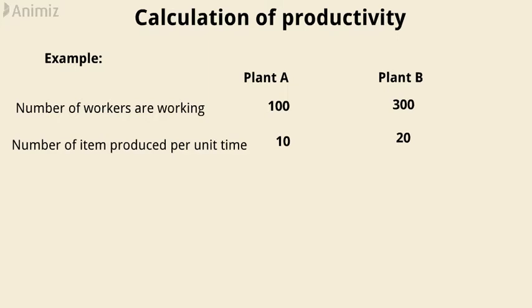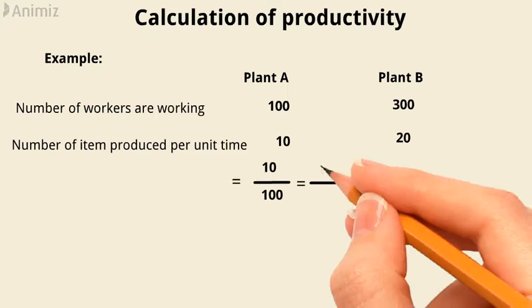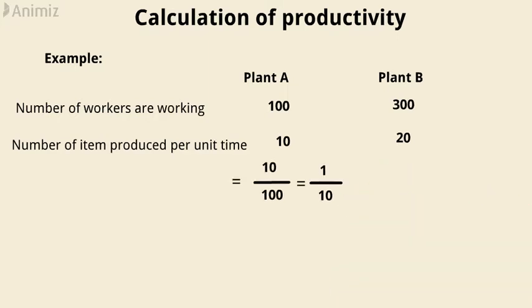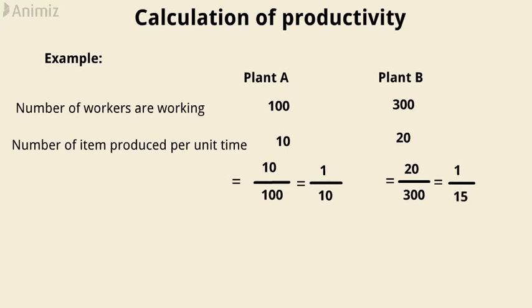Therefore, productivity of plant A is 1/10, and productivity of plant B is 1/15. Now, pause the video and try to understand the calculation again.